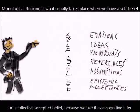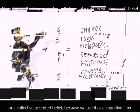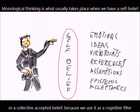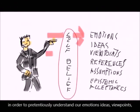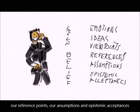Monological thinking is usually what takes place when we have a self-belief or a collectively accepted belief, because we use it as a cognitive filter in order to pretentiously understand our emotions, our ideas, our viewpoints, our reference points, and even our assumptions and epistemic acceptances.